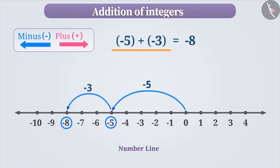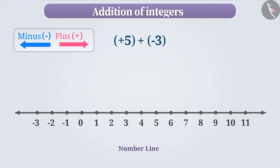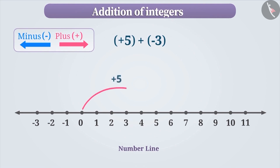Now suppose we have to find the value of plus 5 plus minus 3 on the number line. To mark plus 5 first, we move 5 steps towards the right of 0. Now to add minus 3 to it, we move 3 steps towards the left of the first integer, resulting in plus 2.